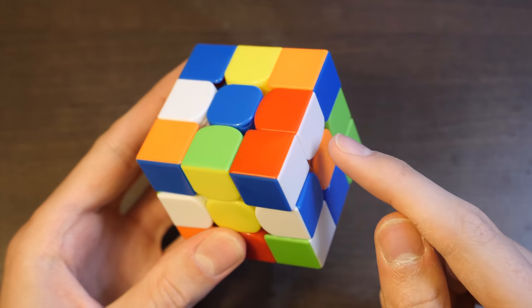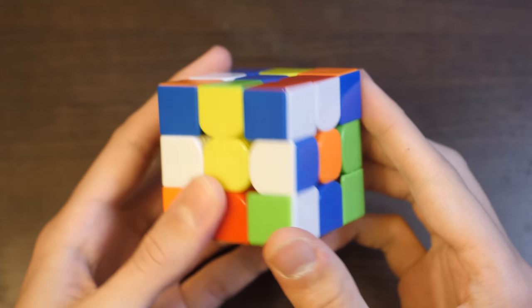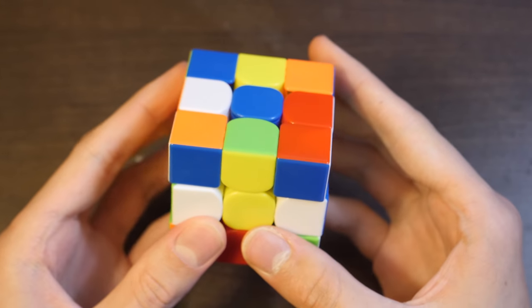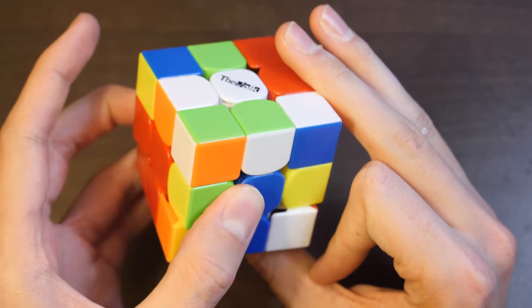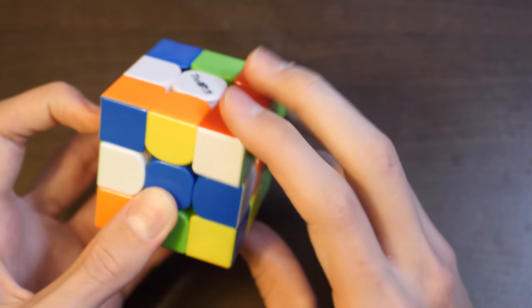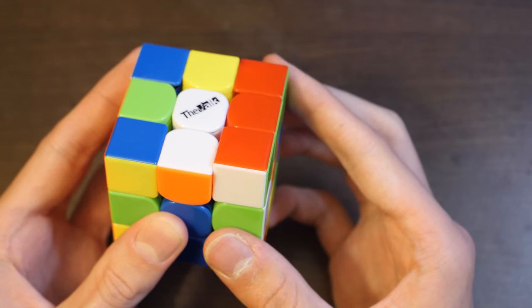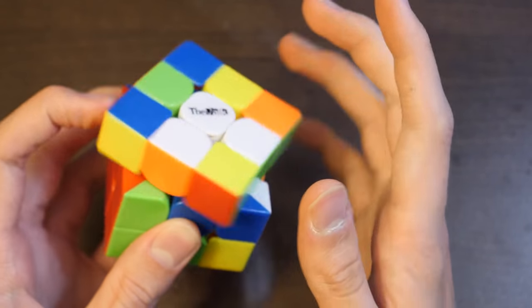For the last solve, Sean does the red-white block here. The pieces are here and here. He's going to start off by solving this one into the back, just like that. And then he's got these two set up, but he solves them like this to have this one set up.